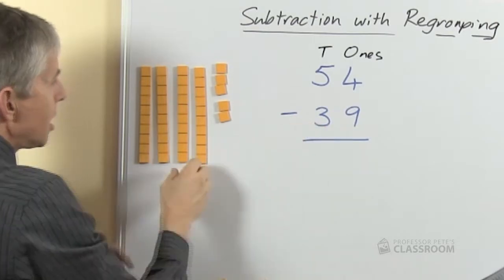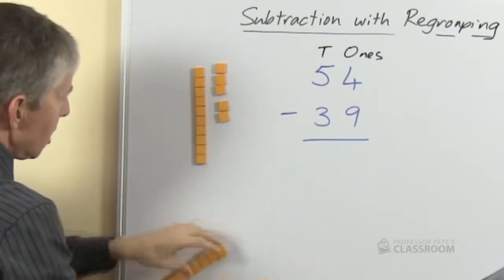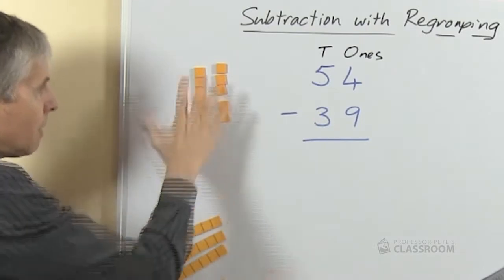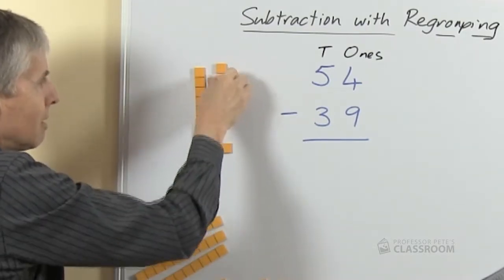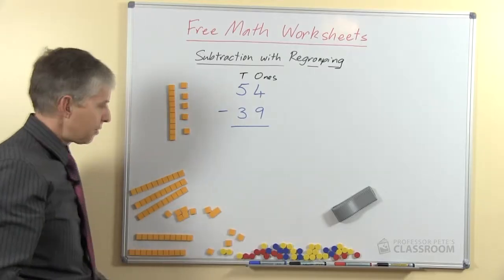And now we're going to take away 3 tens, there we go and of course there's 1 ten left. There is our answer, what is the answer? The answer is 15.